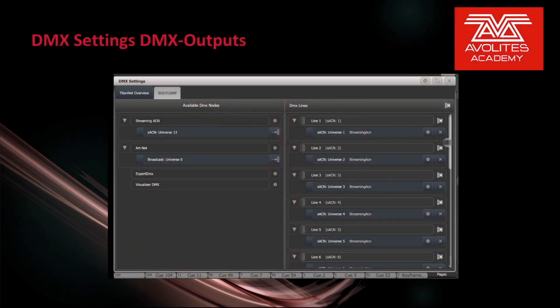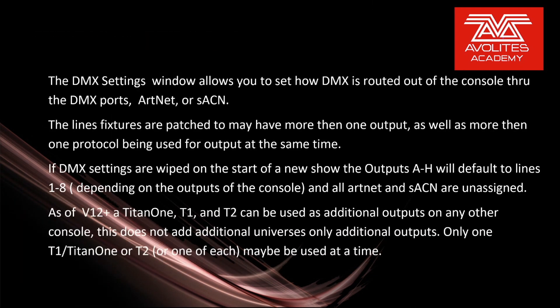In this video we're going to discuss DMX settings and the DMX outputs on the console. The DMX settings window allows you to set how DMX is routed out of the console through the DMX ports — Art-Net or streaming ACN. The lines fixtures are patched to may have more than one output, as well as more than one protocol being used for output at the same time.